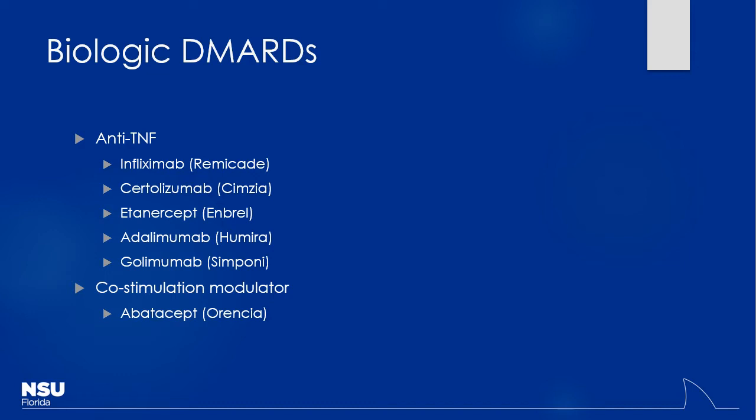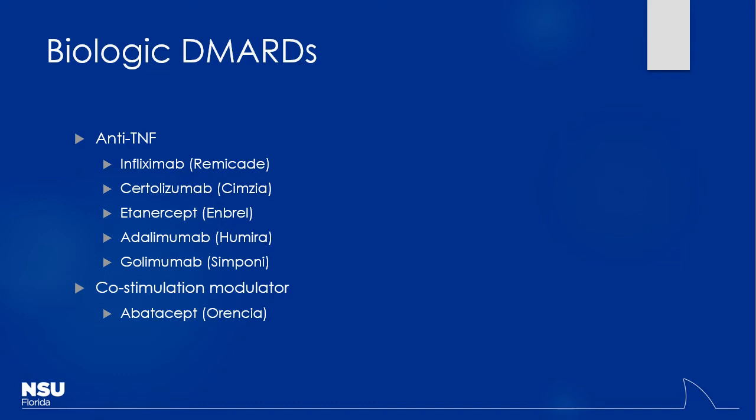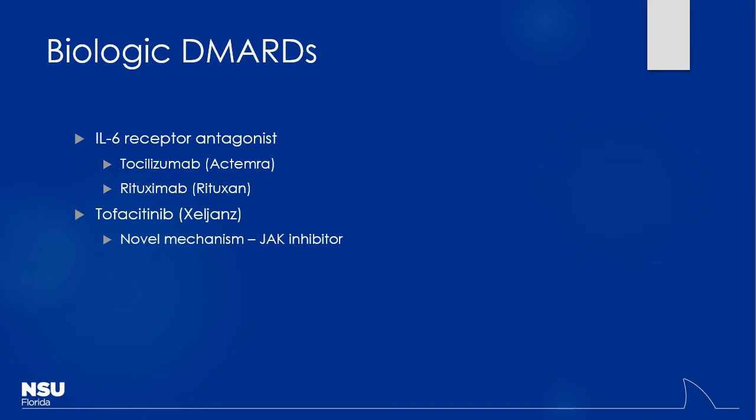The biologic DMARDs can be broken down by their specific target — most are monoclonal antibodies targeted towards a particular inflammatory cytokine, whether it be TNF/tumor necrosis factor alpha or interleukin-6. Then there's a co-stimulation modulator called abatacept. We'll also have tofacitinib — this is not technically a biologic but it's one of the newer ones, also known as Xeljanz. It's actually changing how we manage this for a lot of patients.